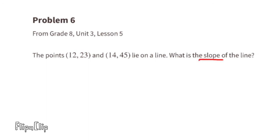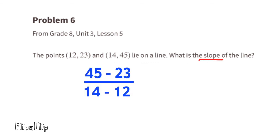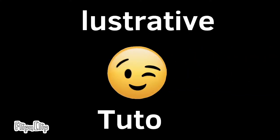Problem number 6 (from Unit 3, Lesson 5): the points (12, 23) and (14, 45) lie on a line. To find the slope, use m equals the difference of y-values divided by the difference of x-values: (45 minus 23) divided by (14 minus 12) equals 22 over 2, which equals 11. The slope of this line is 11.